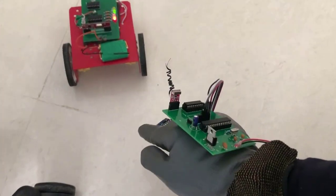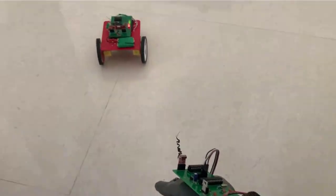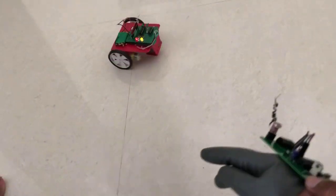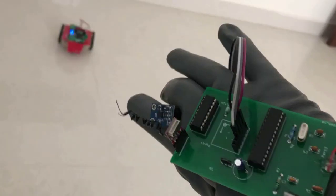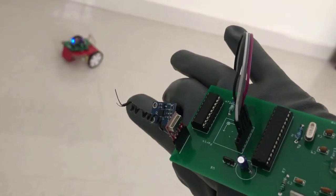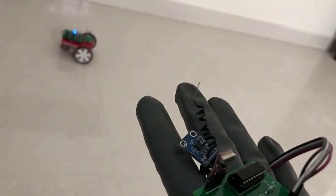Today we are back with a new project, a wireless gesture control robot using Arduino and accelerometer. You can see with the help of finger gestures we are controlling the robot - forwarding it, pulling it back, turning it left and turning it right.